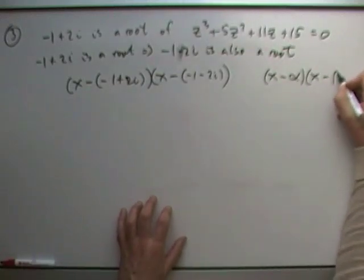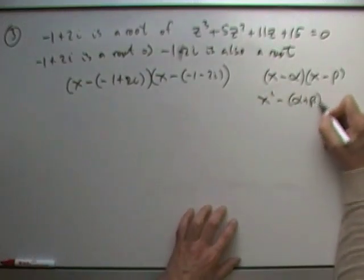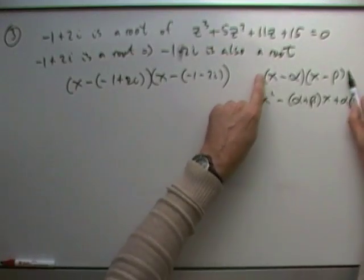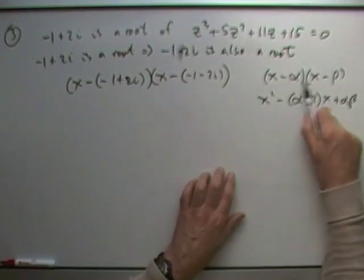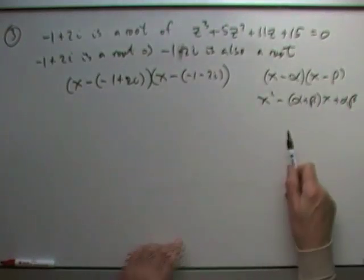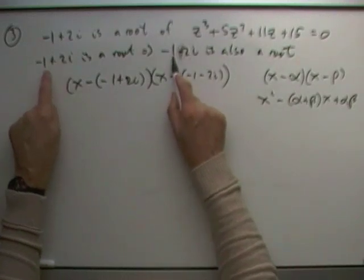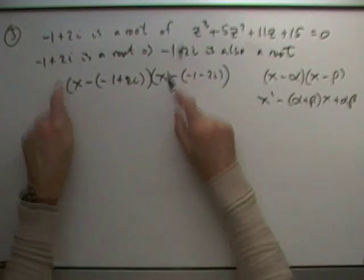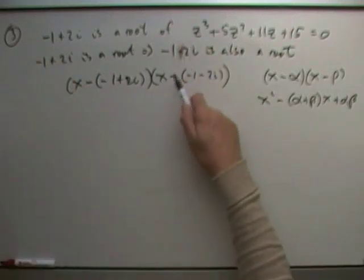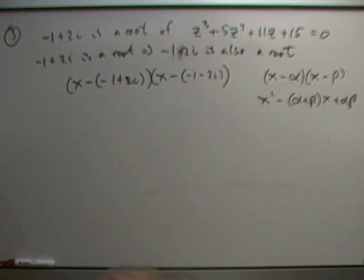If you've got a pair of brackets with roots alpha and beta, multiplying out gives you x squared minus (alpha plus beta)x plus alpha·beta. The middle coefficient is the sum of the roots and the constant term is the product of the roots. For conjugate pairs, this is especially easy: the imaginary parts cancel in the sum, and the product is just one squared plus two squared — the sum of squares rather than the difference.